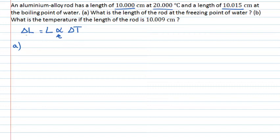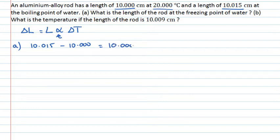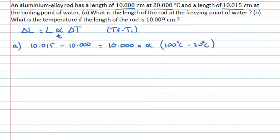Let's write down what our change in length is. The change in length is the final length minus the initial length: 10.015 centimetres minus 10.000 centimetres. That change in length delta L equals the original length, 10.000, multiplied by alpha, multiplied by the change in temperature, T final minus T initial. The initial temperature was 20 degrees Celsius, and the final temperature is the boiling point of water at 100 degrees Celsius, so that change in temperature is 80 degrees.